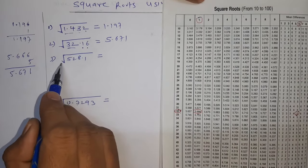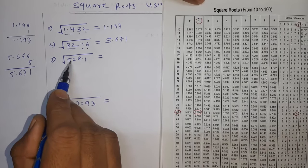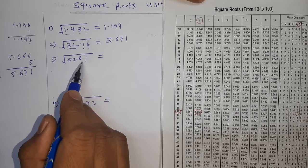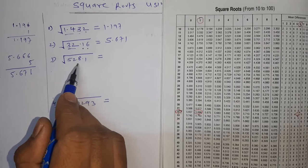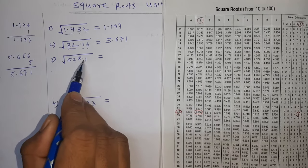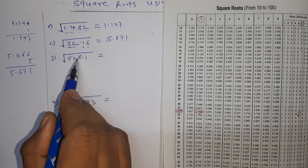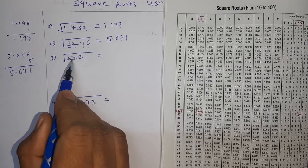Now third example, root of 528. Remember students, we can see square root up to 100 directly. But here number is 528.1. We have to shift the decimal. You can write 52.81 or you can write 5.281.